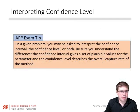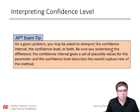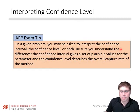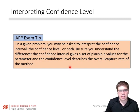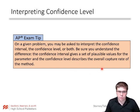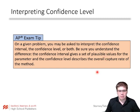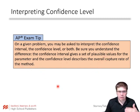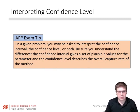AP exam tip: on a given problem you may be asked to interpret the confidence interval, the confidence level, or both — be sure you understand the difference. The confidence interval gives us the range of plausible values for the parameter, and the confidence level describes the overall capture rate of that method: our confidence in the process versus the range of plausible values for the parameter.